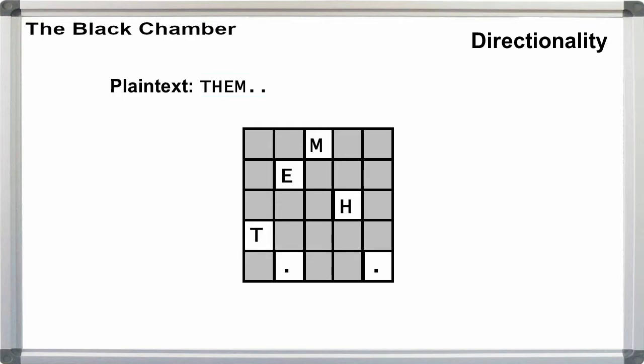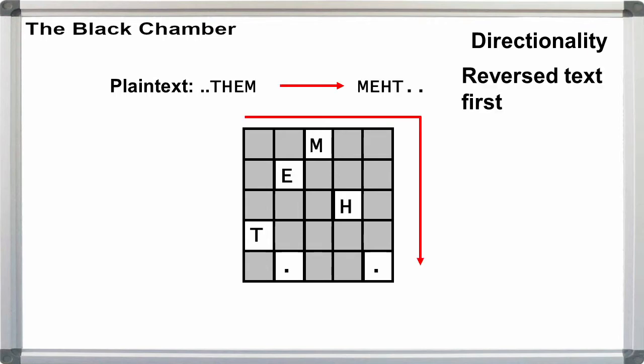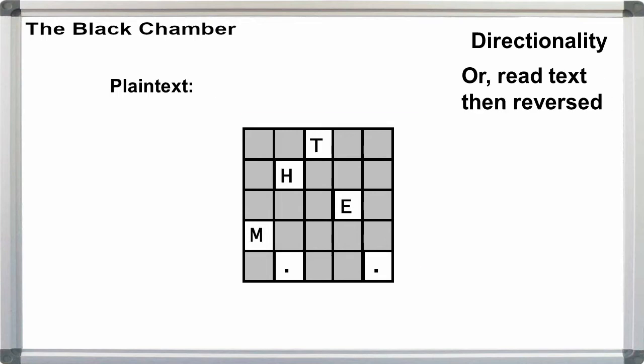If you have this kind of grid, M-E-H-T, you will not be able to extract T-H-E-M under normal conditions. What this means is that the original plain text was reversed before it was written into the grill, or that the cipher was reversed after it was written out.